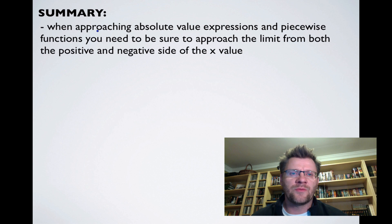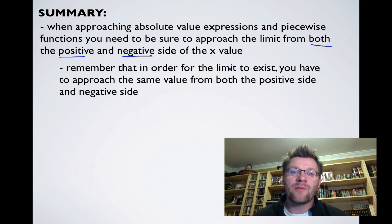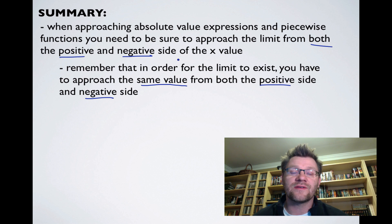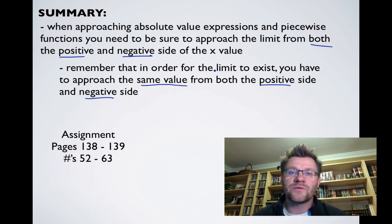In summary, when approaching absolute value expressions and piecewise functions, you must approach the limit from both sides — positive and negative. For the limit to exist, you must reach the same value from both sides; different left- and right-hand limits mean the limit does not exist. Your assignment is pages 138 to 139, numbers 52 to 63. Good luck and we'll see you in class.